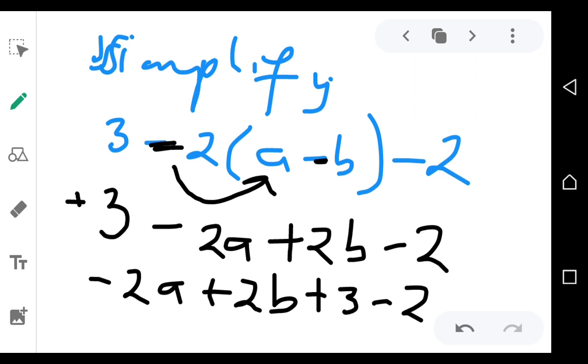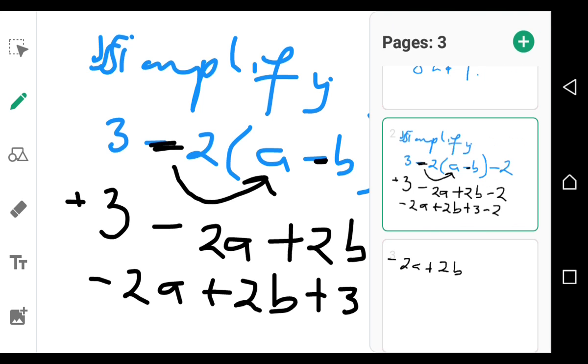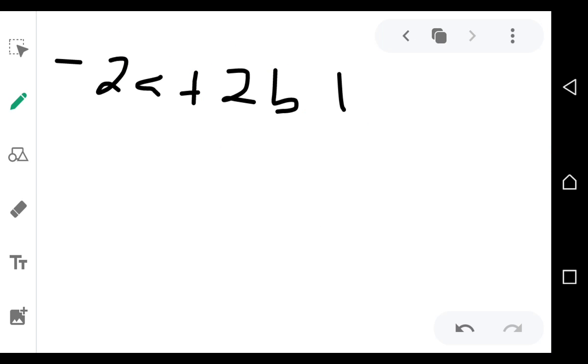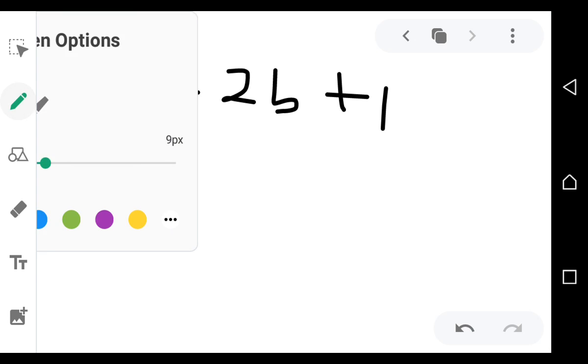So I've got negative 2a plus 2b, and then what is positive 3 minus 2? It is positive 1, so it is plus 1. That's why you solve this. So this is the answer.